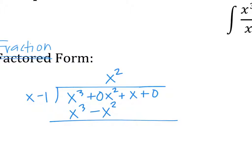Long division is a little bit tricky — you do need to subtract, not add. So X cubed minus X cubed is 0. 0X squared minus minus X squared is X squared. Please be careful — this is where people make mistakes. Plus X plus 0.